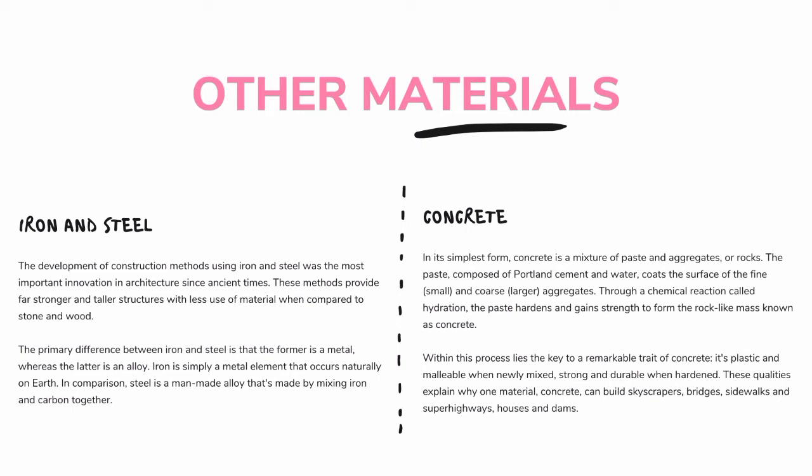Iron and Steel. The development of construction methods using iron and steel was the most important innovation in architecture since ancient times. These methods provide far stronger and taller structures with less use of material compared to stone and wood. Iron is simply a metal element that occurs naturally on earth, whereas steel is a man-made alloy made by mixing iron and carbon together.